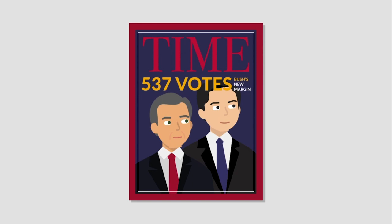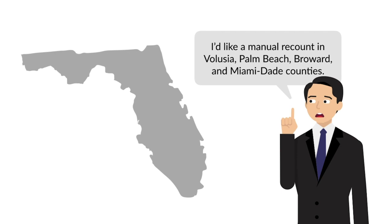Under Florida election law, this gave Gore the right to seek a manual recount county by county, which he did in four counties: Volusia, Palm Beach, Broward, and Miami-Dade.